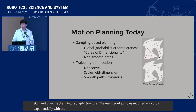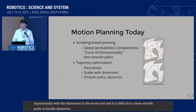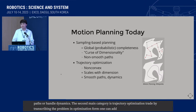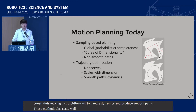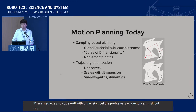Sampling-based planning is also difficult to produce smooth paths or handle dynamics. The second main category is trajectory optimization. By transcribing the motion planning problem in optimization form, one can add all manner of costs and constraints, making it straightforward to handle dynamics and produce smooth paths. These methods also scale well with dimension, but the problems are non-convex in all but the simplest cases, making global optimality or even feasibility far from guaranteed.